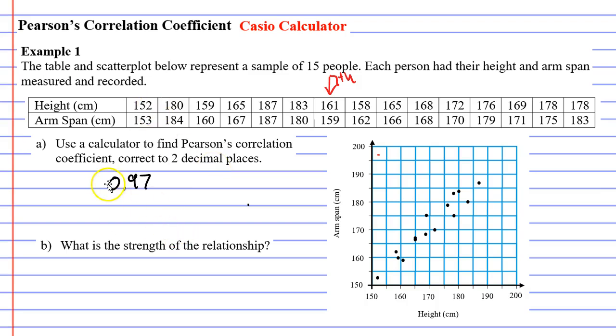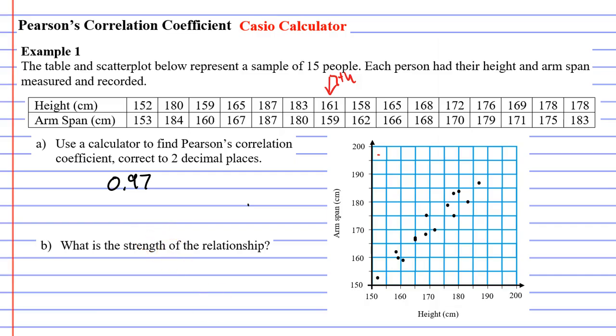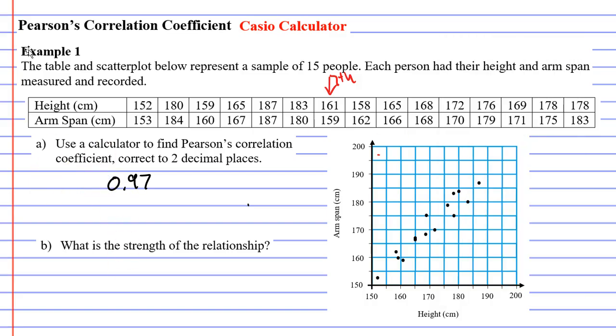0.97. Now, is this a positive or a negative number? You'll notice that there's no negative at the front, which implies that it's a positive number. It's positive 0.97, which we can see when we look at the scatter plot because it's going up.